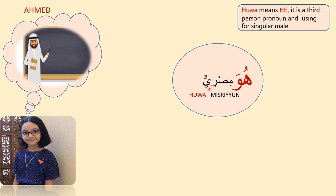Let us revise third person detached pronouns — in Arabic, Dhamaa'ir al-Gha'ib. Hua means he, for singular male. Huma means dual, for dual male and dual female. Hum means they, for plural male. Hia means she, for singular female. Hunna means they, for plural female.